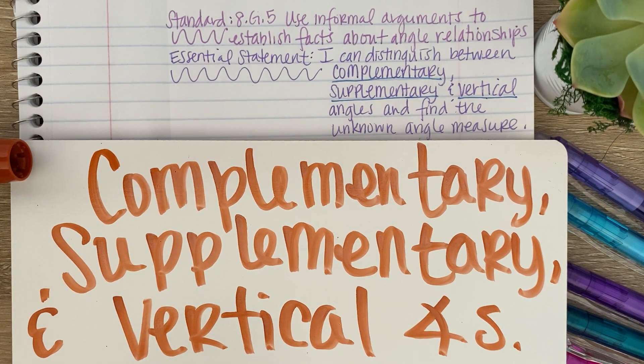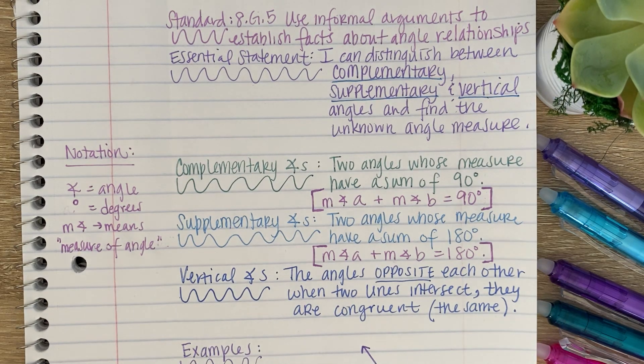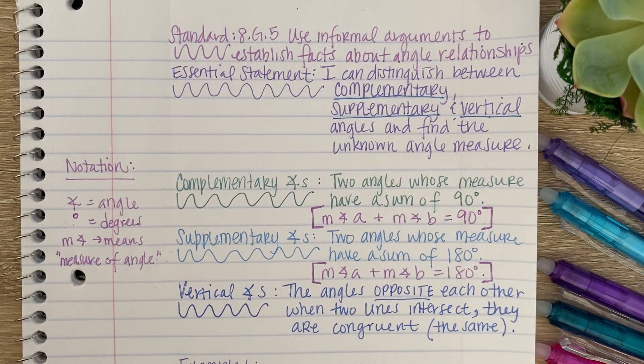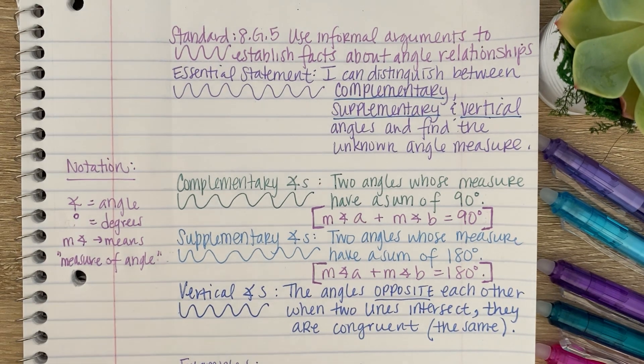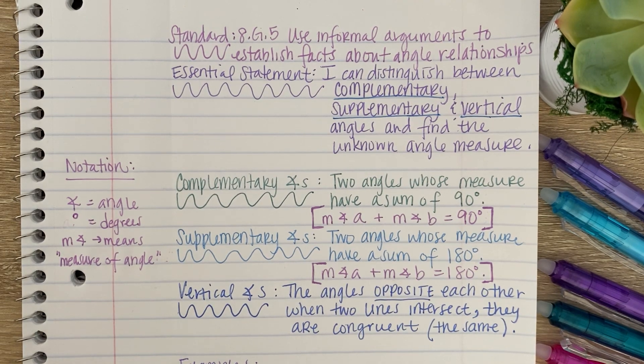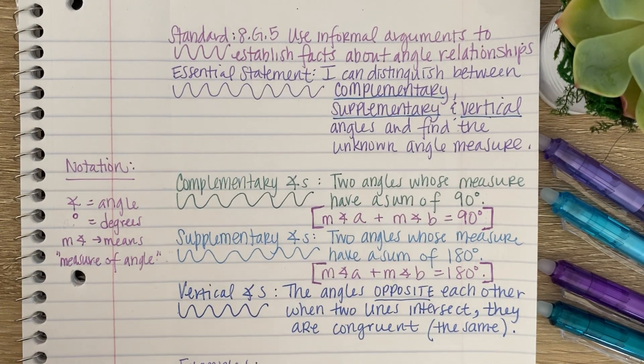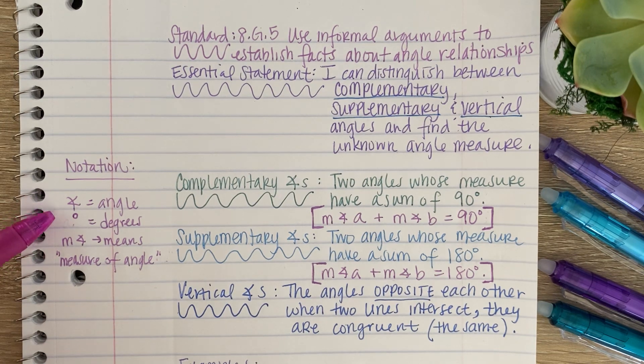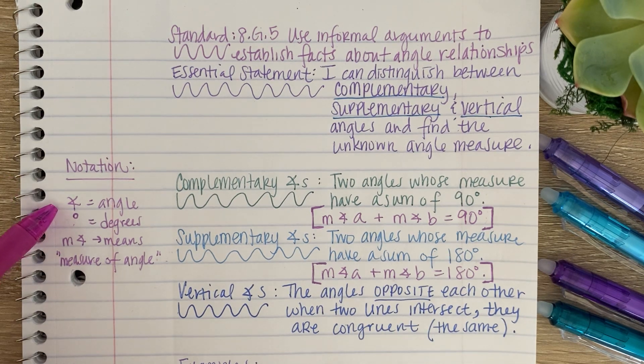So first we will have a couple of definitions to get us started. So what are complementary angles? Well, complementary angles are two angles whose measure have a sum of 90 degrees. And algebraically, that means the measure of angle A plus the measure of angle B equals 90 degrees. Now, if you notice over here on the left, I have a couple of things that you should take into account. It's our notation.